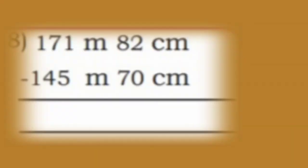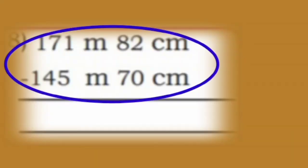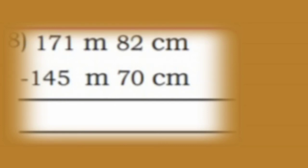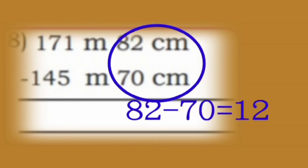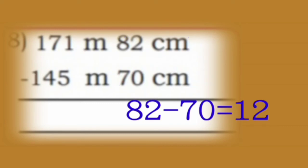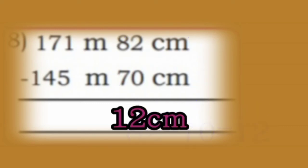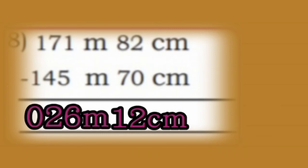Let us solve eighth one: 171 meter 82 cm minus 145 meter 70 cm. First subtract centimeters: 82 minus 70 is 12. Next subtract meters: 171 minus 145, that is 26 meter. So the answer is 26 meter 12 cm.